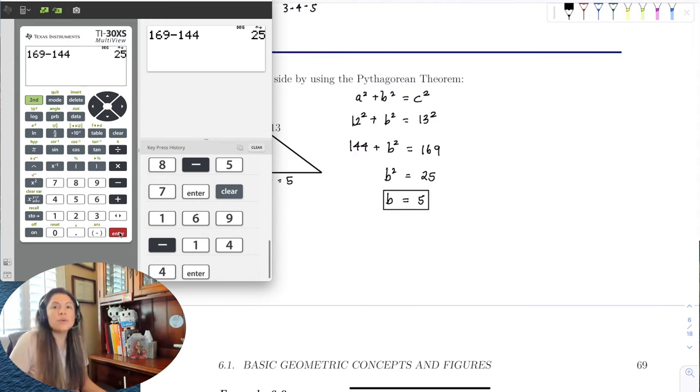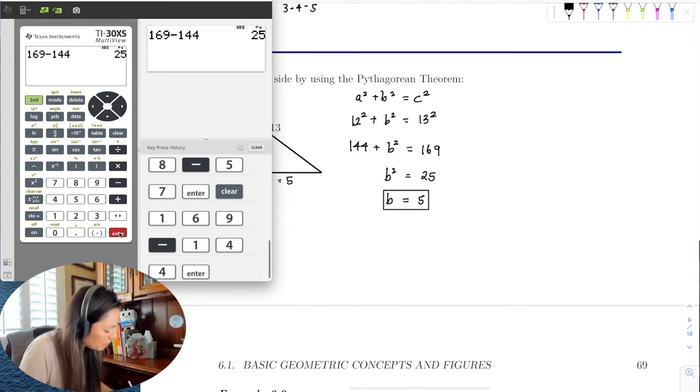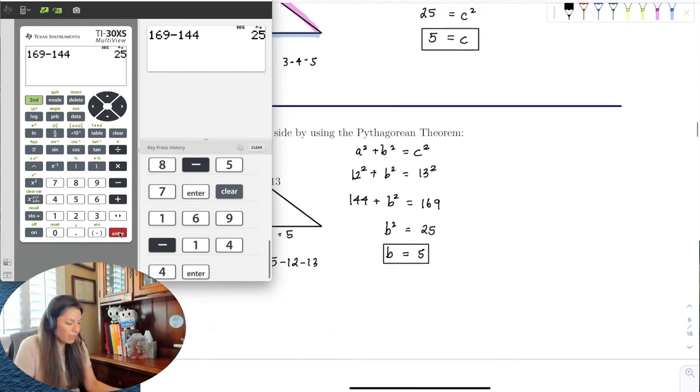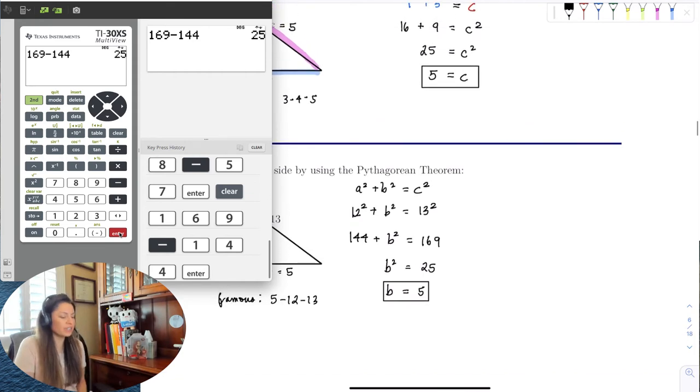Okay, so this is a famous one as well. This is the famous 5, 12, 13. Now when I say it's a famous 5, 12, 13, or a famous 3, 4, 5, you're like, are you really seriously saying they're famous? Like, what do you mean they're famous?